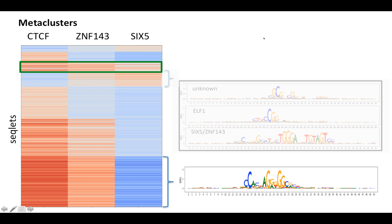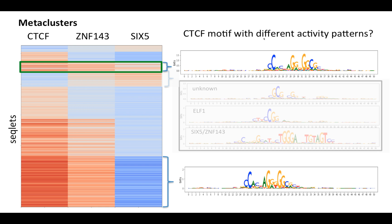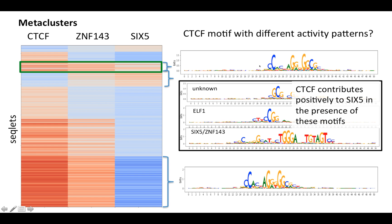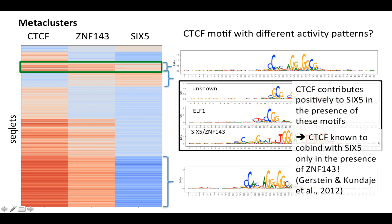Another interesting thing that sometimes happens is that the same motif can appear in different meta-clusters. For example, in this meta-cluster which is high for CTCF, ZNF143, and SIG-FI, we found the CTCF motif popping up, which means that the CTCF motif can sometimes have a positive importance for SIG-FI depending on the sequence that it occurs in. When we drilled into this, we found that these instances of the CTCF motif with a positive contribution to SIG-FI tend to co-occur with the motifs from the other cluster high for ZNF143 and SIG-FI. This implies that when CTCF occurs in the presence of these other motifs, it tends to contribute positively to SIG-FI — consistent with known biology showing that CTCF only co-binds with SIG-FI in the presence of ZNF143.